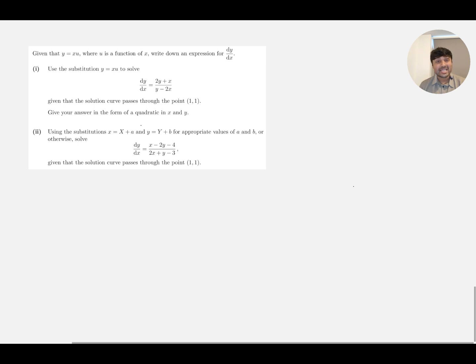Part 1: Use the substitution y equals x times u to solve dy/dx equals (2y + x)/(y - 2x). Given that the solution curve passes through the point (1,1), give your answer in the form of a quadratic in x and y.